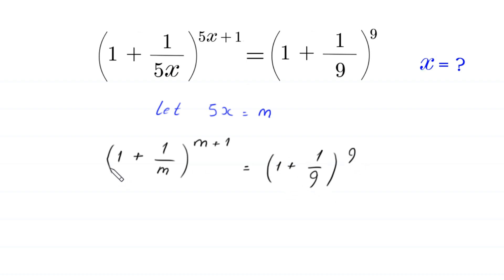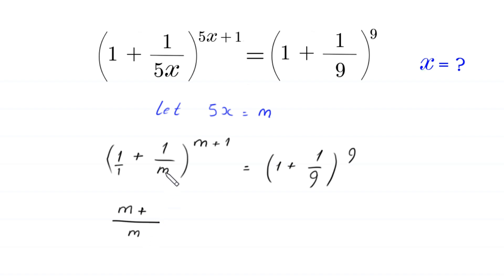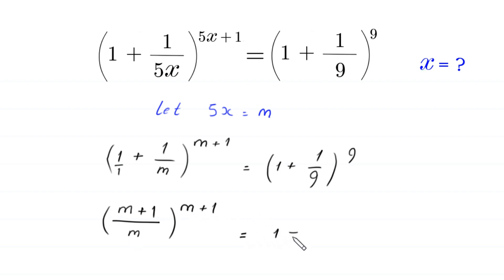Now, we can write the denominator of this fraction. We take the LCM of 1 and m. The LCM is m; m divided by 1 is m, m times 1 is m; m divided by m is 1, 1 times 1 is 1. So the left hand side becomes m plus 1 over m, whole to the power m plus 1, equal to 1 plus 1 over 9, whole to the power 9.